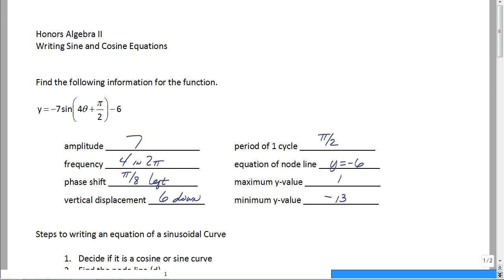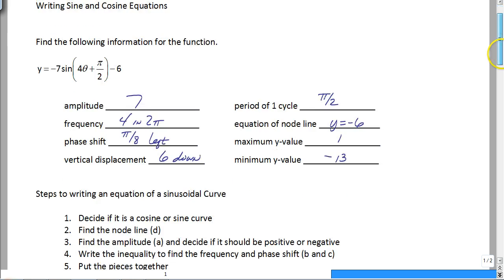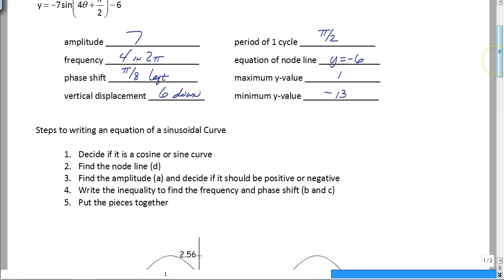So how are we going to write the sinusoidal curve? Well first you have to decide if you want it to be a cosine or a sine curve. You actually get to pick. It does not matter which one you want to use. Then you need to find the node line. That's not that difficult. That's just the average of your high and your low. Then you are going to find the amplitude based on, well just take the distance from the low all the way to the height and divide it by 2. And then what are you going to do from there? Well how about you write an inequality to find your B and C, the frequency in the phase shift. And then you are just going to put it all together.